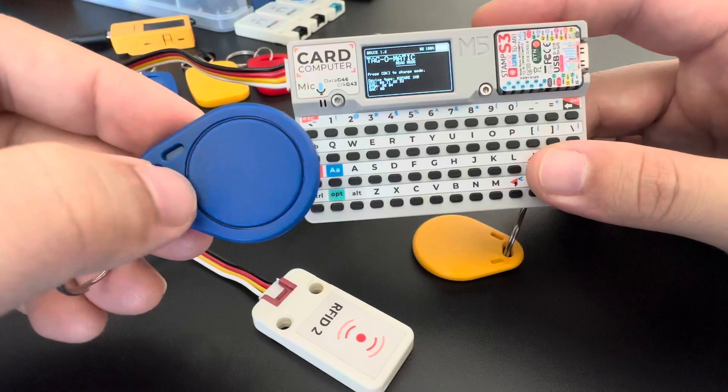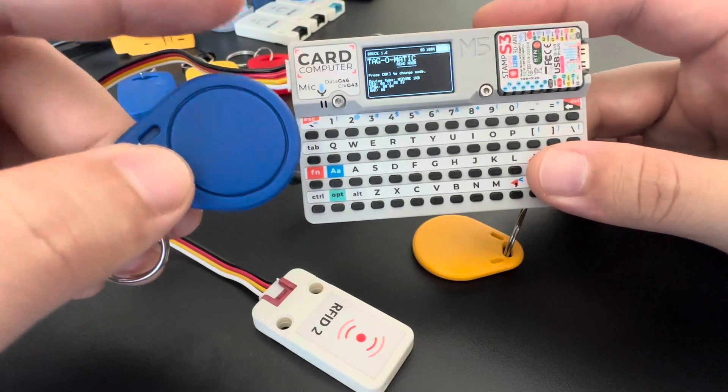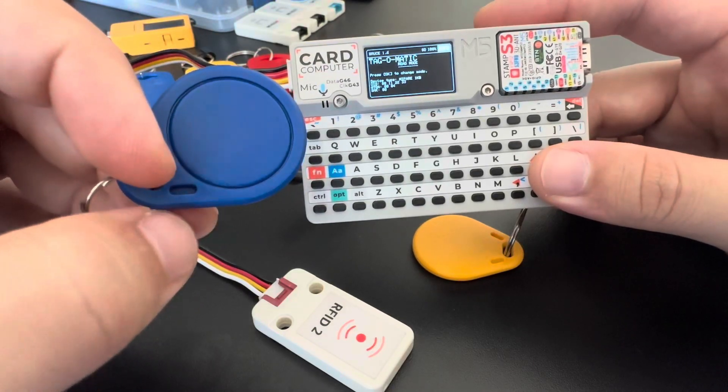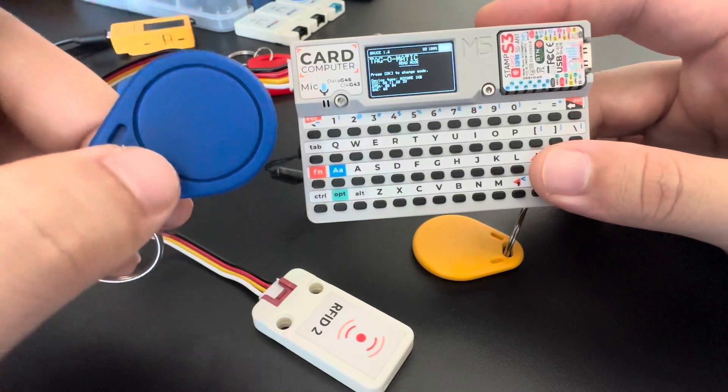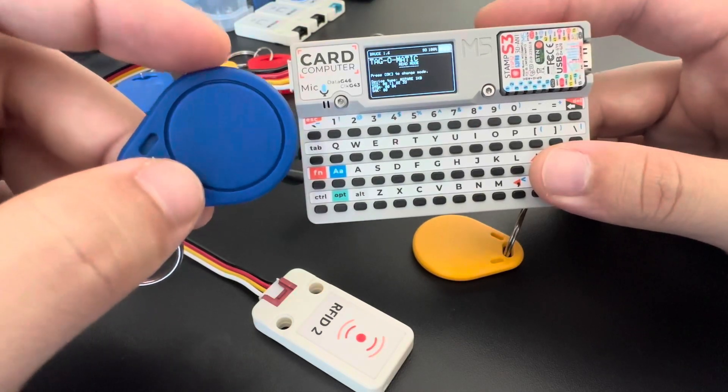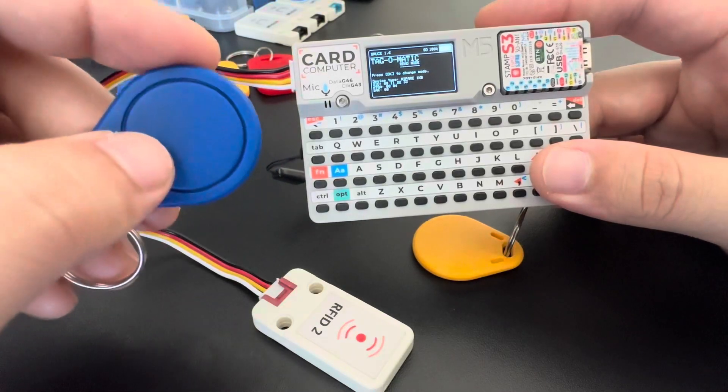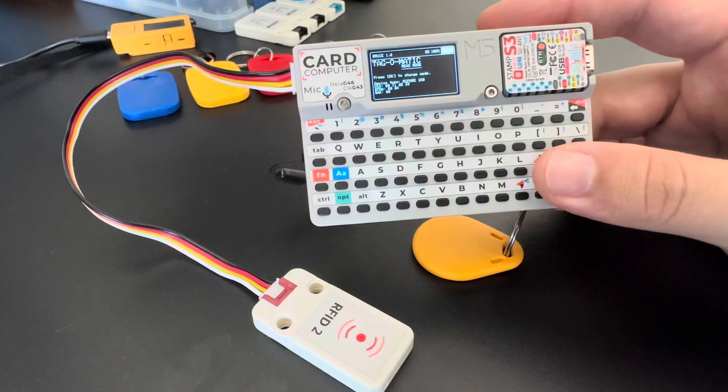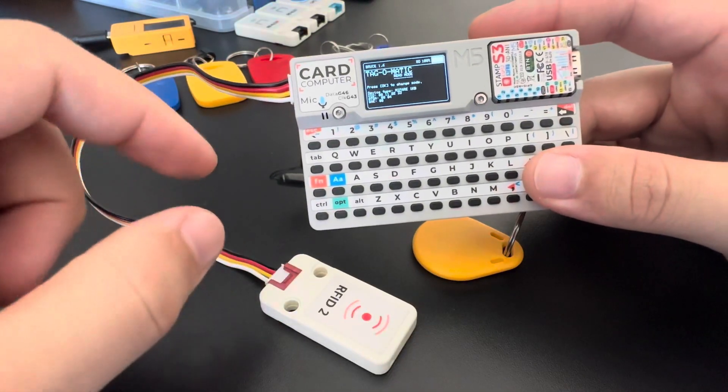Also, reading takes longer because read mode tries to read all data blocks from the tag. For example, in this case, a Mifare 1K has 64 blocks with 16 bytes each. It will try to read all the data blocks so if we want to save the dump or write the data to another tag, it has all the required data.